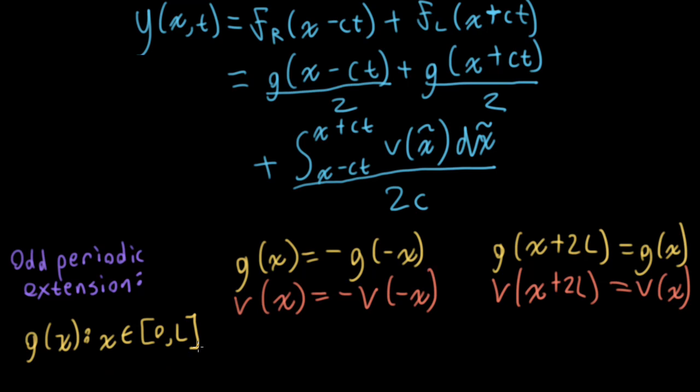But let's check to make sure this structure satisfies the boundary conditions. So let's see what happens if we zero out x. So if we zero out x, I wind up with g minus ct plus g plus ct. But we know from this odd characteristic that we've defined, one of these is equal to the minus of the other. So those terms go away. And if I get rid of the x here, I'm integrating v between minus ct and plus ct. But I could split that into two halves. And I know one half of the integral is going to be the negative of the other. So that zeroes out as well. So this whole thing equals zero.